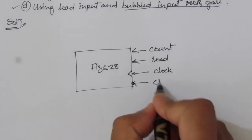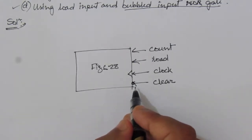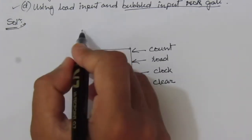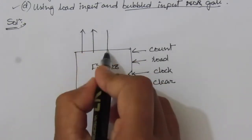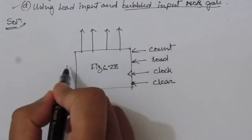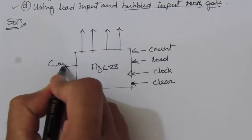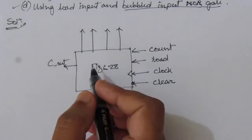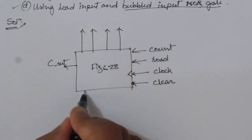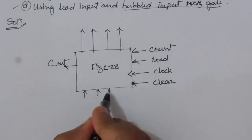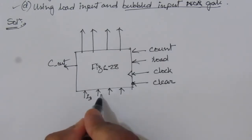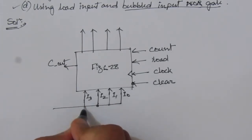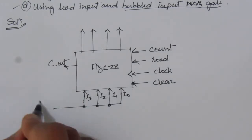We have an active-low clear input — whenever there is a 1-to-0 transition, all the outputs of the flip-flops will be reset. Here we will have 4 outputs and one carry output C_out. This carry output will be 1 whenever load is 0, count is 1, and all 4 outputs are 1. We also have 4 inputs: I3, I2, I1, and I0.